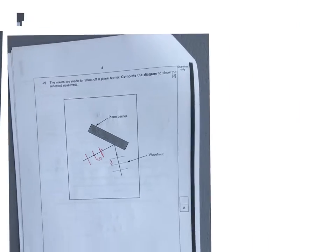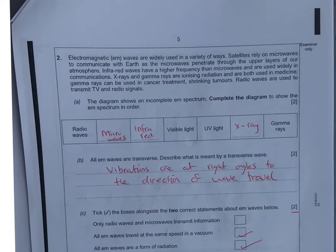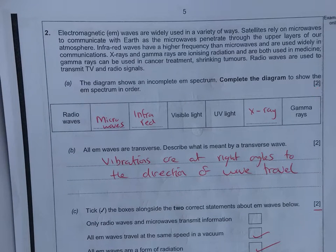On to the next question then, which is all about the EM spectrum. So two marks come from microwaves, infrared, and x-rays. Red Martians Invade Venus Using X-ray Guns is a quick way to remember that.